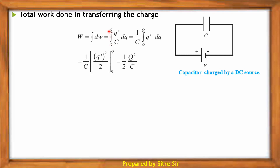Integrating from 0 to Q: W equals integral of (Q'/C)·dQ. Since C is constant, taking it outside the integration sign, the remaining integral of Q'·dQ gives Q' squared by 2. Applying the limits, upper limit Q and lower limit 0, we get Q squared by 2 minus 0. Hence W equals one-half Q squared by C.